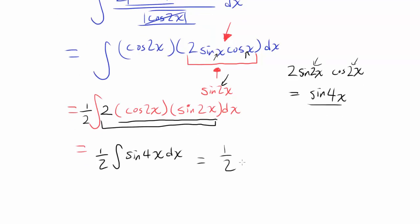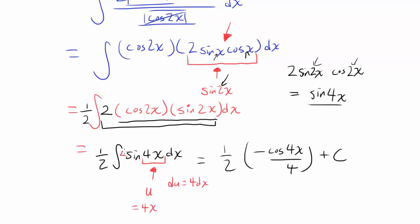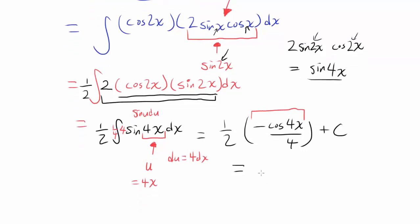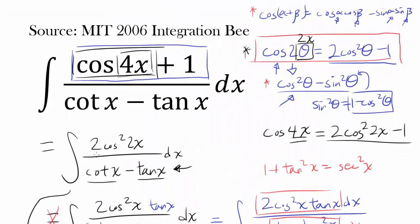We can integrate one half times the integral of sine 4x dx quite easily. Using u-substitution with u equals 4x, du equals 4 dx, so we divide by 4. The integral of sine u du is negative cosine u, giving negative cosine 4x over 4. Multiplying by one half gives negative 1 over 8. So the final answer is: the integral of (cosine 4x plus 1) divided by (cotangent x minus tangent x) dx equals negative one eighth cosine of 4x plus C.